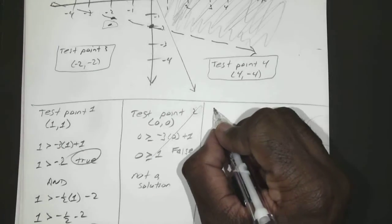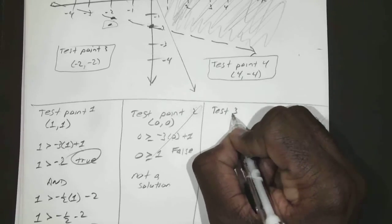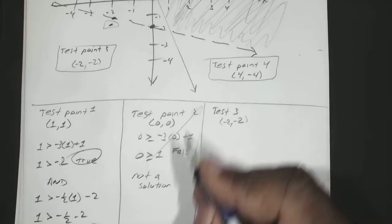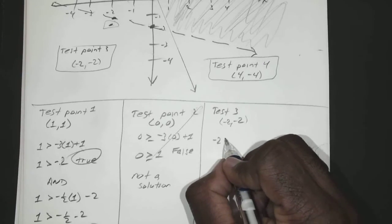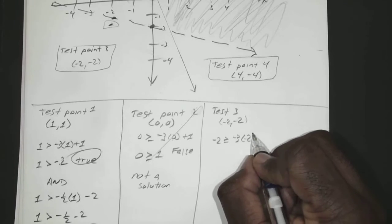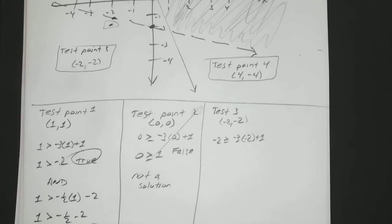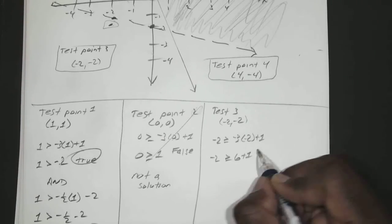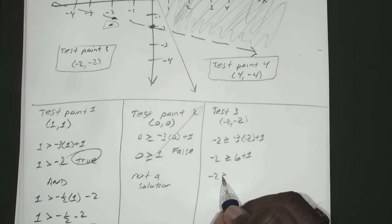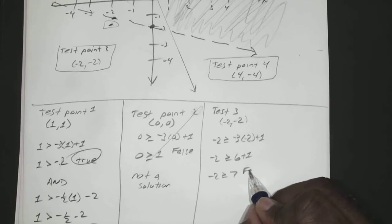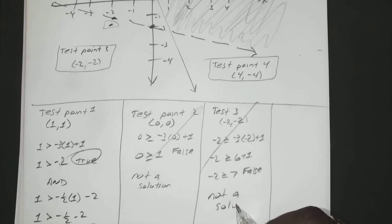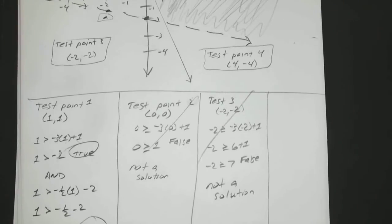Okay? So if we test in test point 3, which is negative 2, negative 2, you have negative 2 is greater than or equal to negative 3 times negative 2 plus 1. So negative 2 is greater than or equal to 6 plus 1. Or negative 2 is greater than or equal to 7, which is false. Okay? So the minute you get a false, it's not a solution.